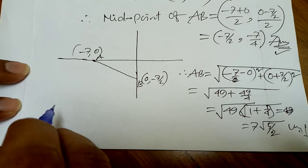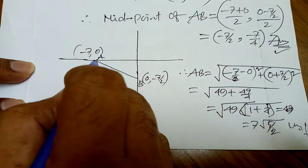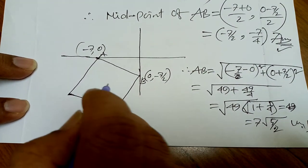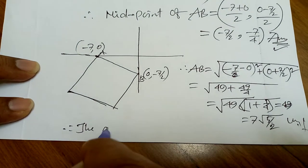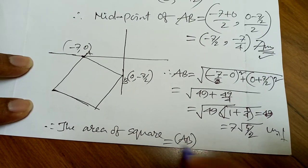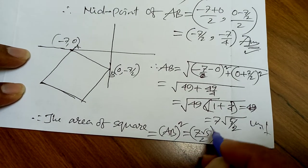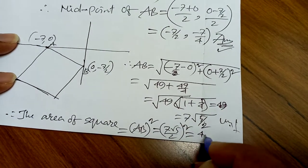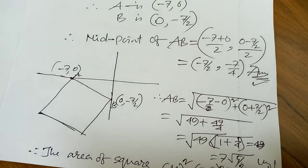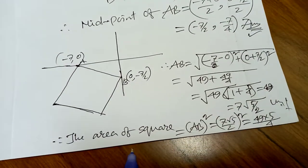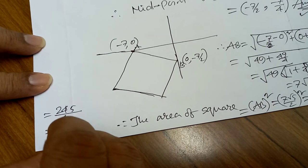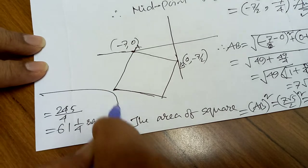So the length of AB = 7√5/2 units. If AB is the side of the square, then area of square = side² = (7√5/2)² = 49 × 5 / 4 = 245/4 = 61¼ square units. This is the area of the square.